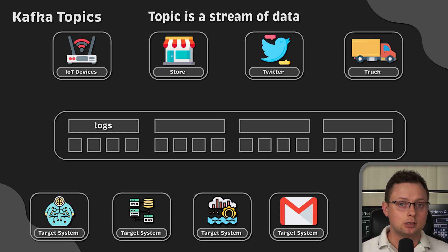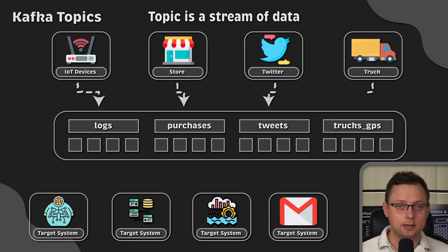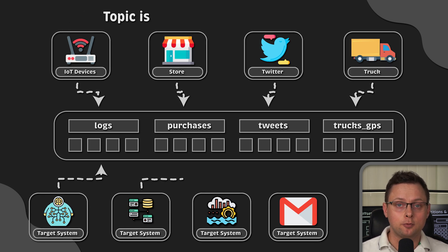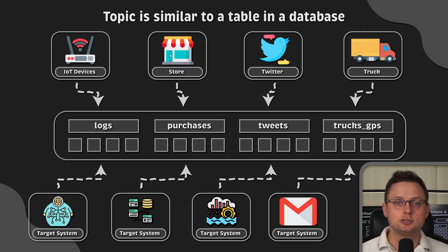Topics could have names like logs, purchases, tweets, tracks, GPS, and so on. A topic in Kafka is a stream of data. If you want to compare it with databases, a Kafka topic is like a table in the database, but without all the constraints.